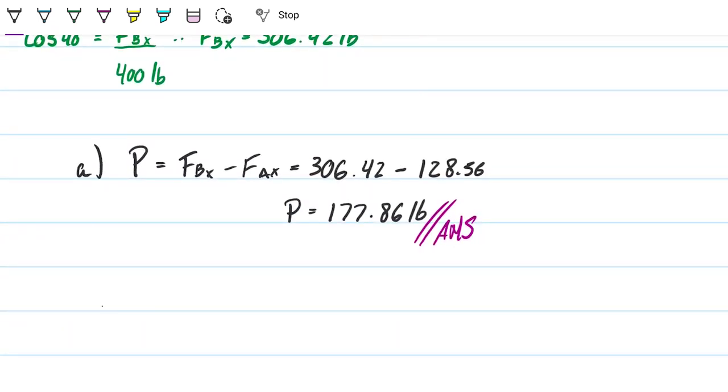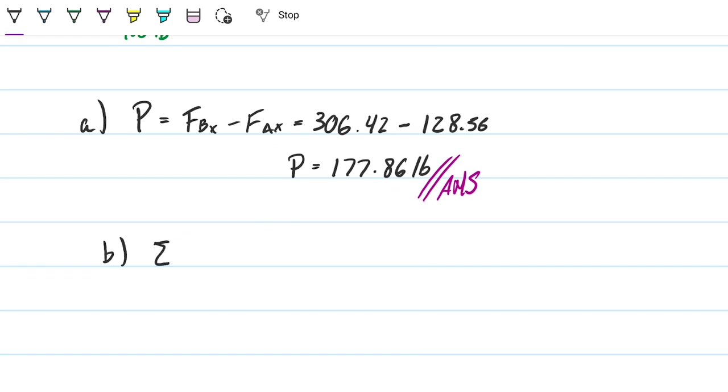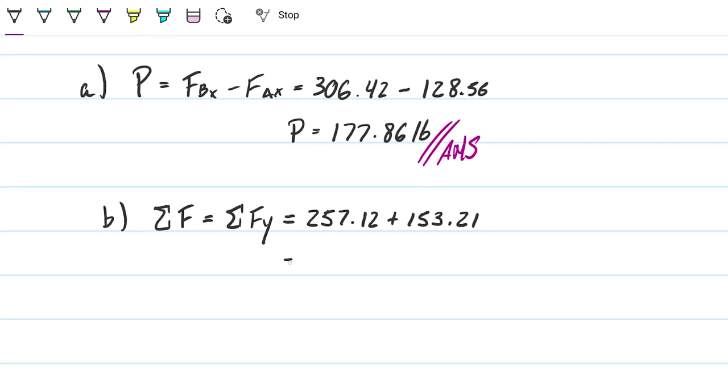So the resultant force, which is vertical because we made it so, it's just going to be f ay plus f by. That's as simple as that. So this is part a, and then part b will be the resultant force that happens to be the sum of the y, because we made it so. And it will be the 257.12, which is the one that comes in from b, plus 153.21 which is coming from a. And these are both in pounds, so the answer is going to be in pounds. And this is going to be 410.33 exactly, pounds.